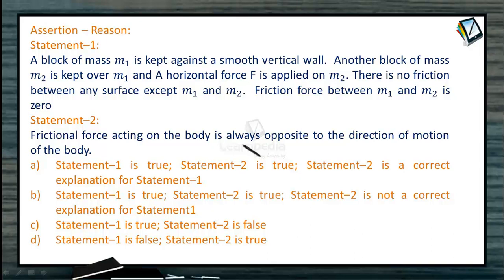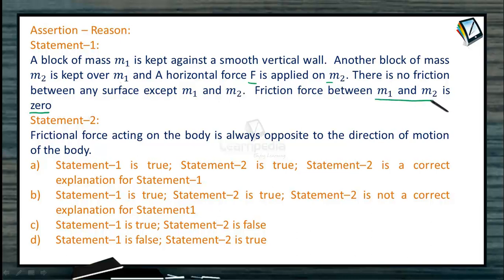This is an assertion and reason question. A block of mass m1 is kept against a smooth vertical wall; another block of mass m2 is kept over m1, and a horizontal force F is applied on m2. There is no friction between any surface except between m1 and m2. We need to verify whether Statement 1 is true, Statement 2 is true, and whether Statement 2 is the correct explanation of Statement 1.